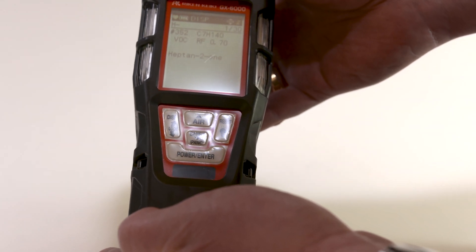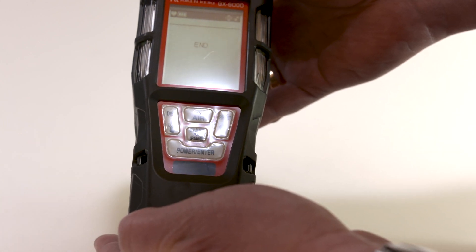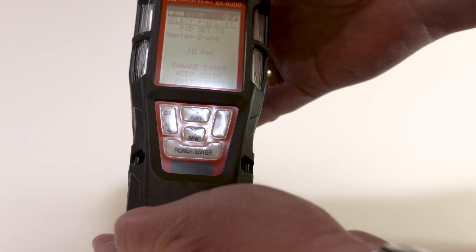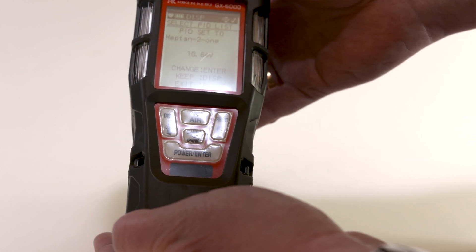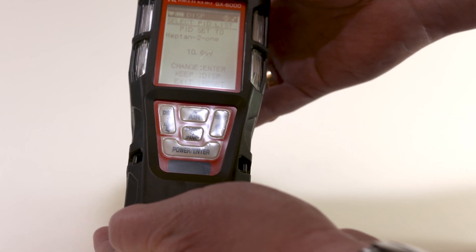Press the enter button. When the setting is completed, the screen returns to the first step automatically. The GX6000 is now ready for detection of the target VOC gas.